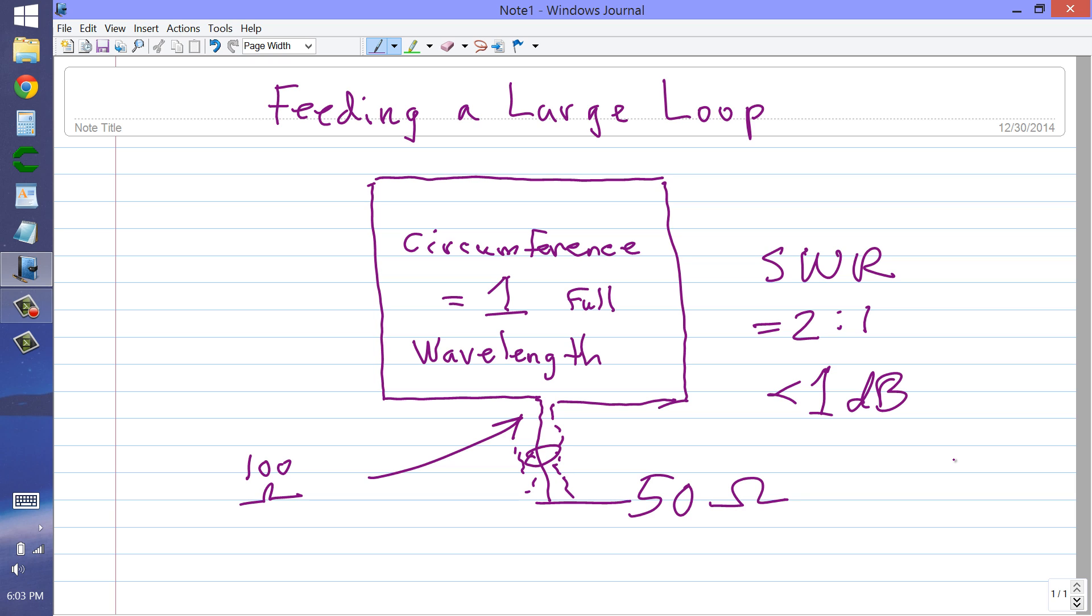So anything less than a decibel in practical situations represents no loss at all. He is asking though, if you were to double this loop over, that is, shorten it so that it's 2 turns with a 1 wavelength circumference, would that produce a 50 ohm impedance at the feed point?